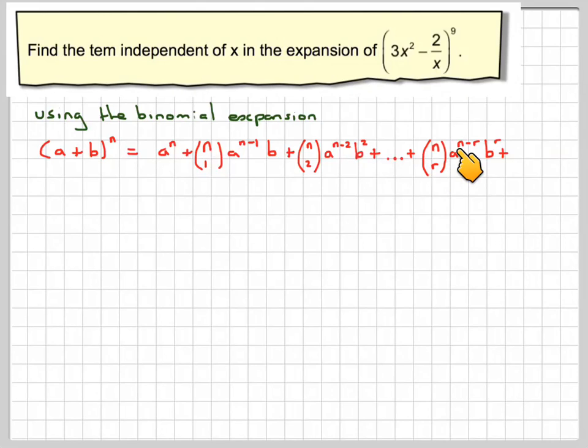ncr, a to the n minus r, b to the r, and we get the last term which is b to the n. This term here is called the general term, and from this we can find specific particular terms of a binomial expansion.